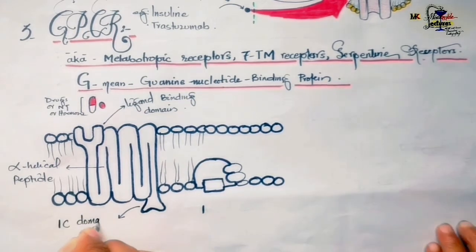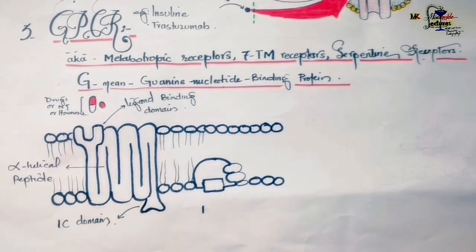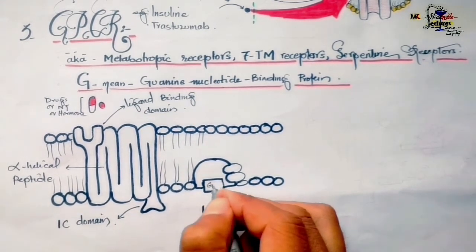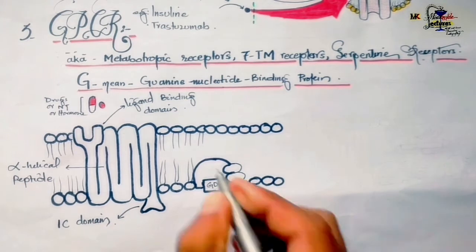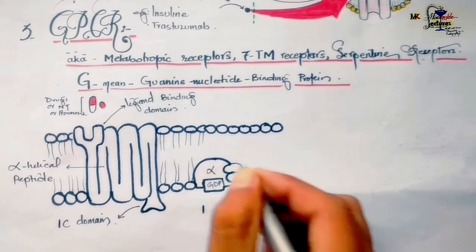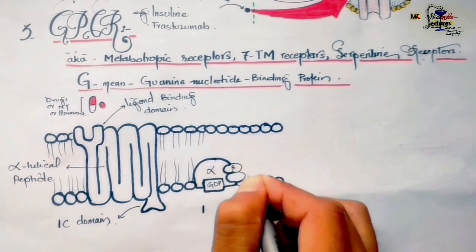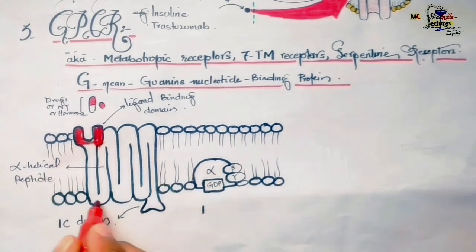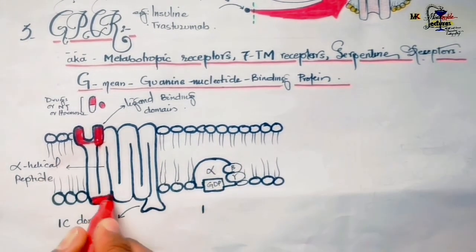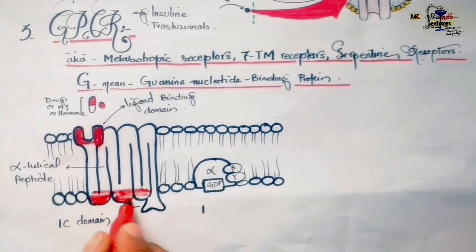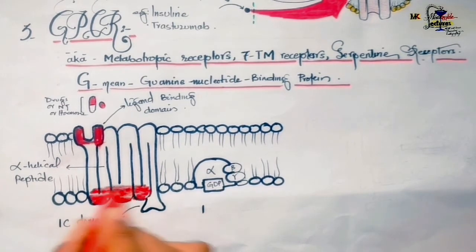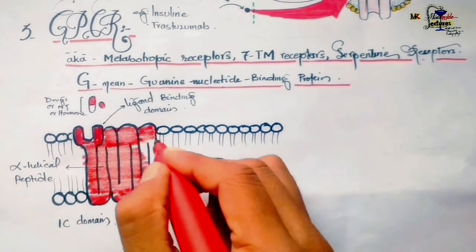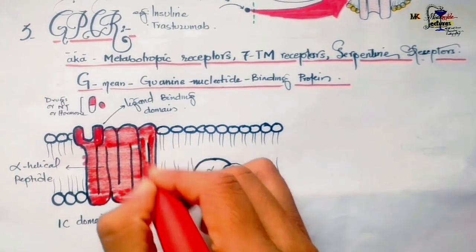Another region is the alpha-helical peptide, which traverses the membrane seven times — that's why they are also called seven-transmembrane receptors — and due to the snake-like structure they are also called serpentine receptors.